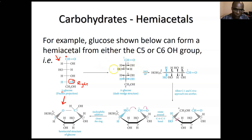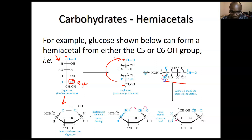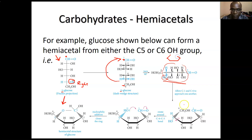You need to rotate the molecule — you always want to number from top to bottom. Rotate the molecule 90 degrees so it is now horizontal. We use the OH that helped us classify it as D to attack the carbonyl, but before that you want to make sure this part of the chain is curved.